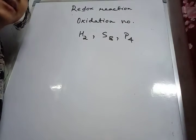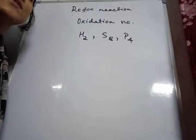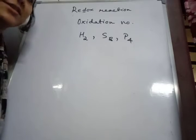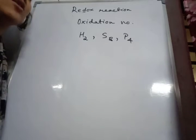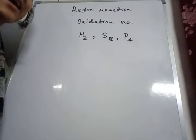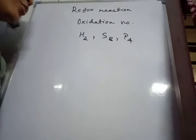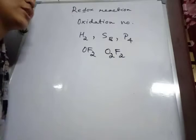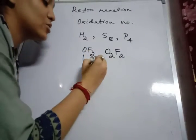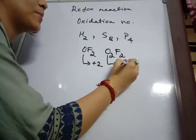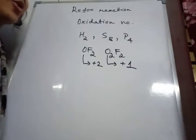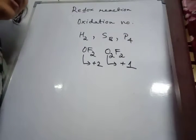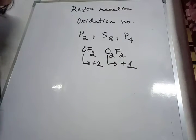The oxidation number of the fluorine atom is always minus one in all of its compounds. The oxidation number of oxygen is minus two in all of its compounds except peroxides, superoxides, and oxygen fluorides. In peroxides it is minus one, in superoxides it is minus half, and in oxygen fluorides — OF2 gives oxygen an oxidation number of plus two, and O2F2 gives plus one. The oxidation number of hydrogen in metallic hydrides is minus one, and in the rest of its compounds it is plus one.